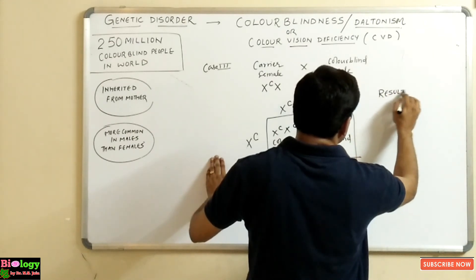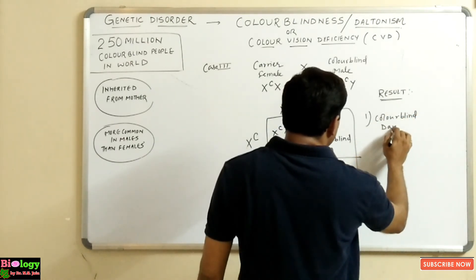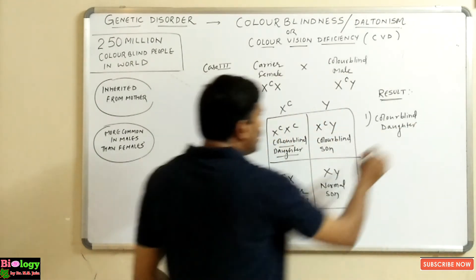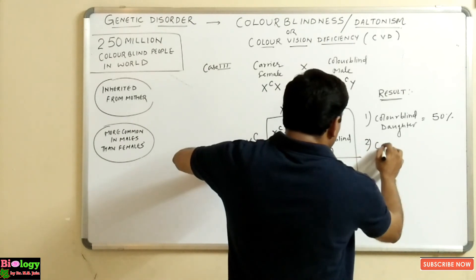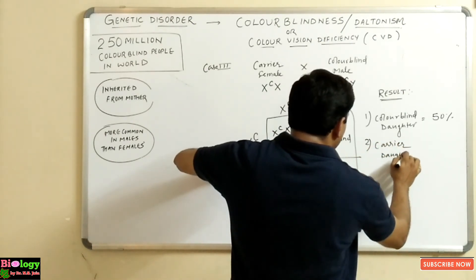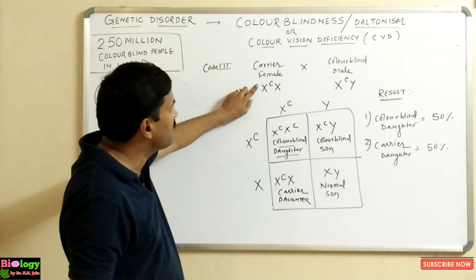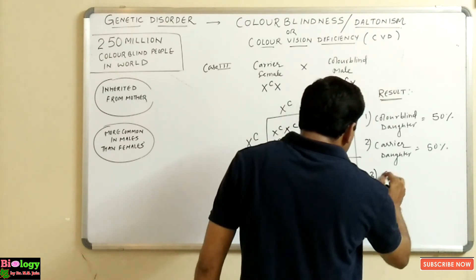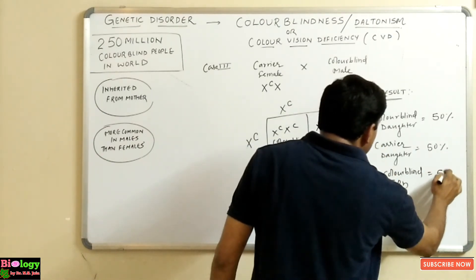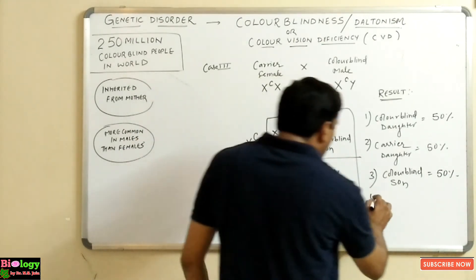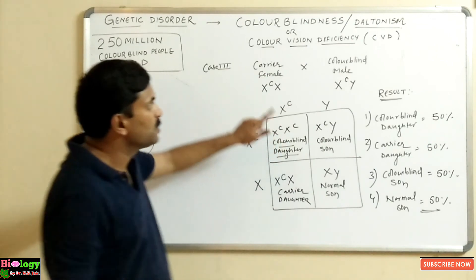The result of Cross 3: out of all daughters, 50% are colorblind and 50% are carriers. Out of all sons, 50% are colorblind and 50% are normal. So when a carrier female crosses with a colorblind male, half the daughters are colorblind, half are carriers, half the sons are colorblind, and half are normal.